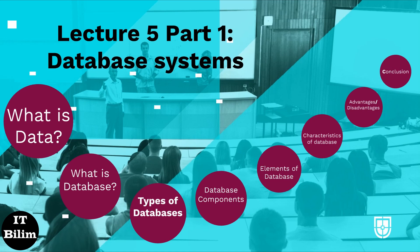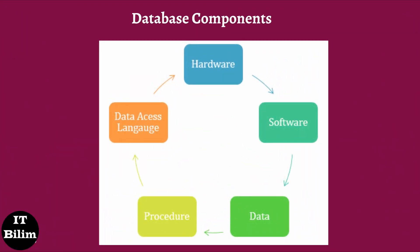Database components. There are five main components of a database. Hardware: The hardware consists of physical, electronic devices like computers, I/O devices, storage devices, etc. This offers the interface between computers and real-world systems. Software: This is a set of programs used to manage and control the overall database. This includes the database software itself, the operating system, the network software used to share the data among users, and the application programs for accessing data in the database.